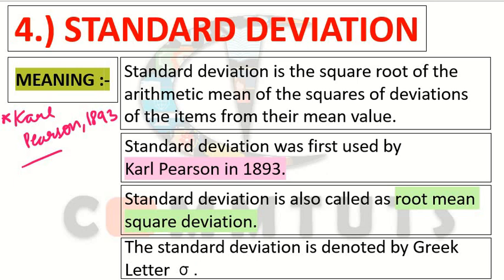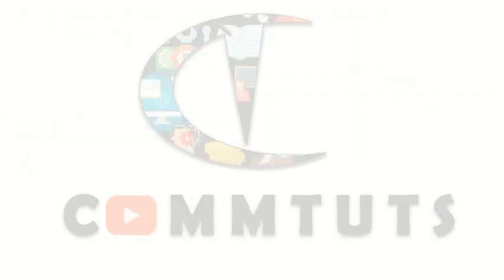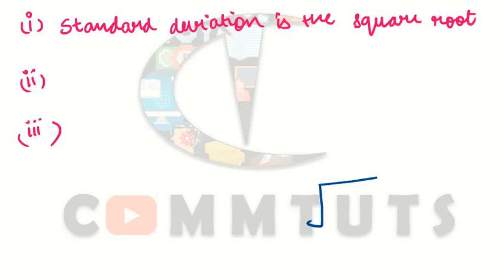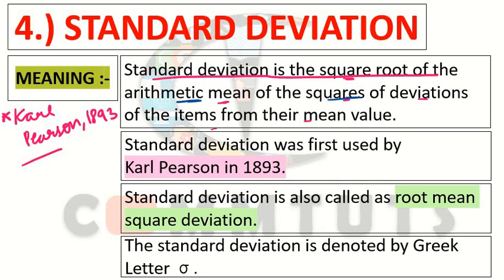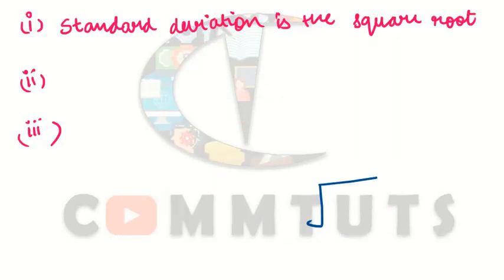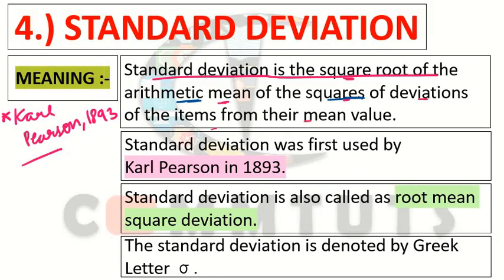The standard deviation is the square root of the arithmetic mean of the squares of deviations of the items from their mean value. This definition seems confusing — square root, arithmetic mean, square of deviations, mean value — so let us break this definition into three parts to understand it clearly. Once we break it down, the formula will also become clear.